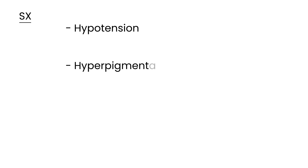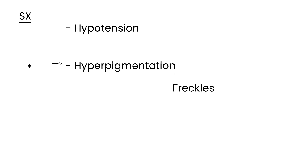Another thing that is very common in Addison's is hyperpigmentation. This is a very important part of Addison's disease and it's important to understand why. Probably every licensing exam question on Addison's disease will mention hyperpigmentation — either freckles or some discoloration of the skin. So why does this happen?